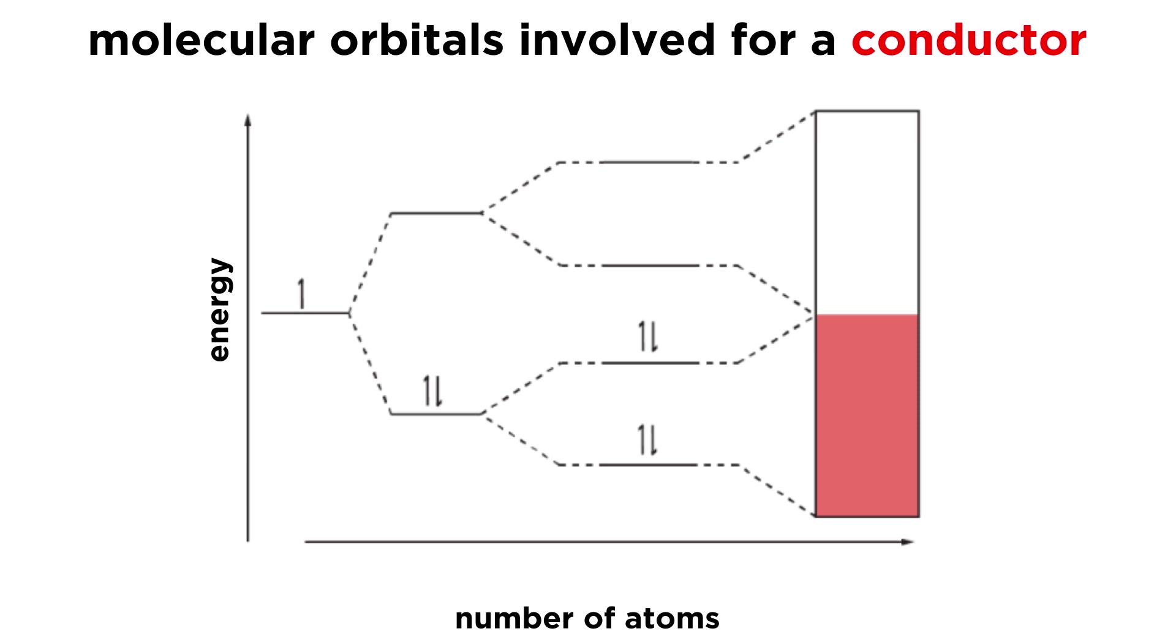As the number of atoms increases from one to two to four to a number so large that it can be compared with infinity for practical purposes, the number of orbitals will increase in the same way. As the number of orbitals becomes incredibly large, they will begin to resemble one continuous band.